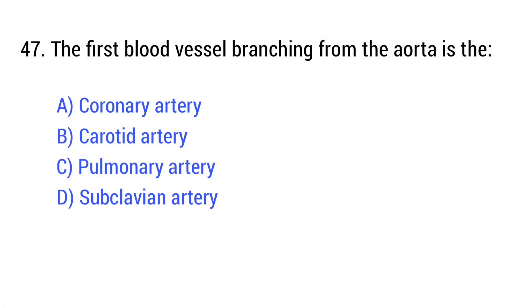Question number 47. The first blood vessel branching from the aorta is the? The right answer is option A: Coronary artery.